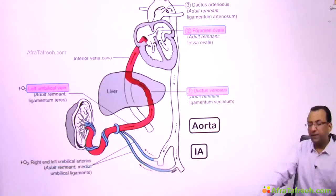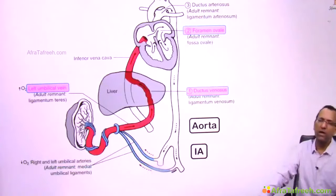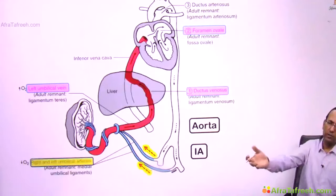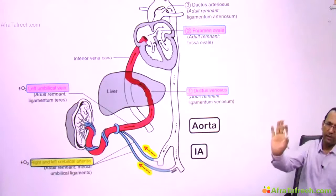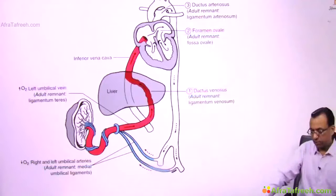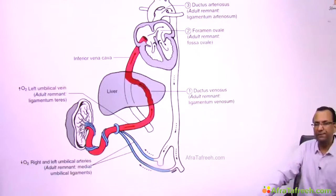The umbilical arteries, shown in blue, carry deoxygenated blood back to the mother. The mother reoxygenates it, and the red oxygenated blood returns again through the left umbilical vein. This is the cycle of mother-fetal circulation.